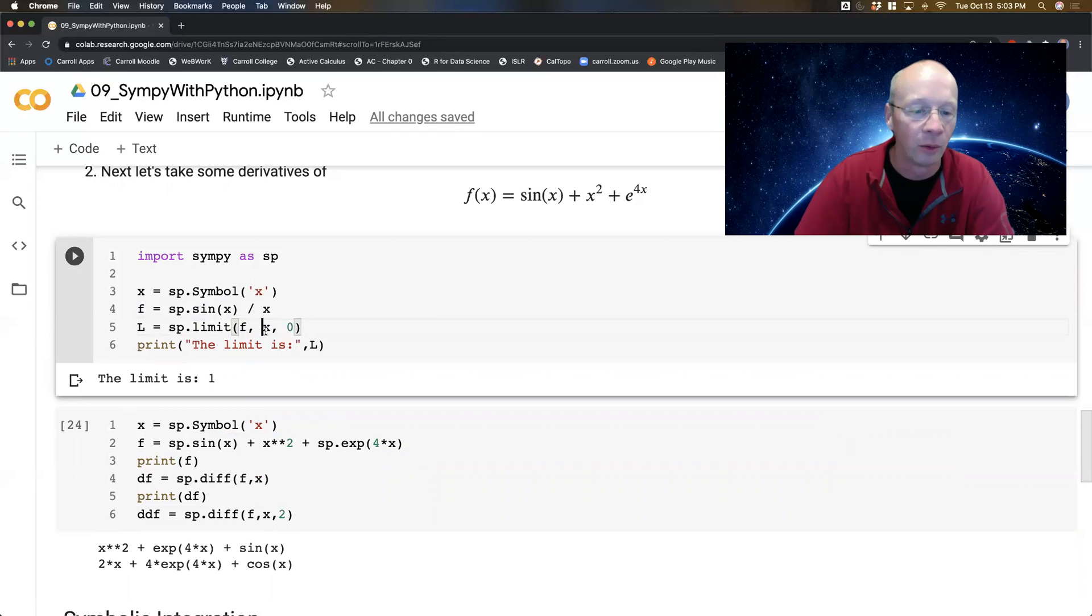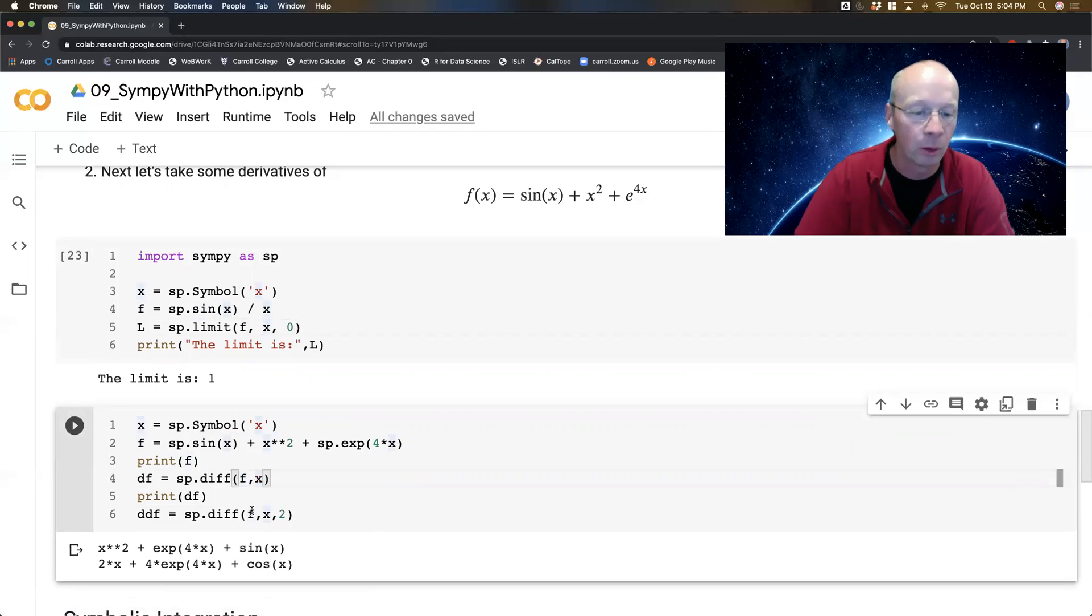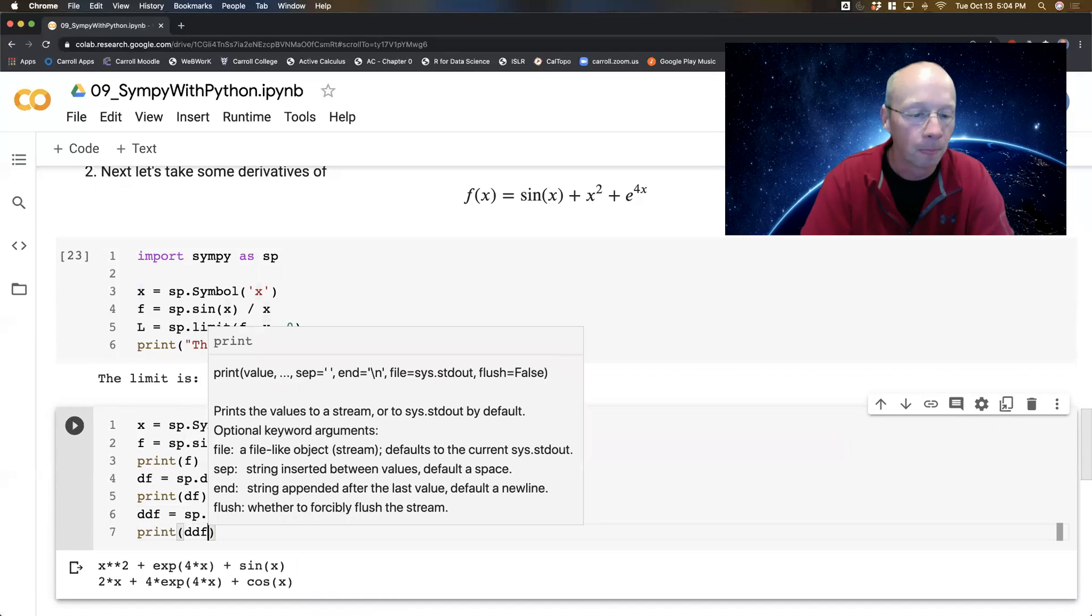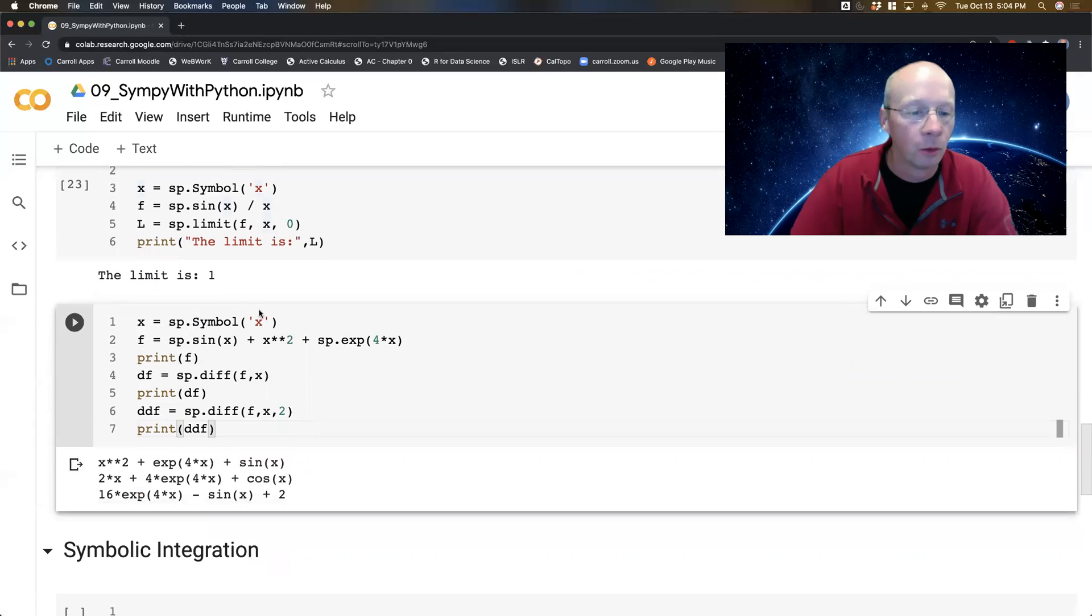The function, the variable, the function, the variable. And then this 2 is going to give me the order of the derivative. So taking two derivatives, let's see here, the derivative of 2X is going to give me a 2, got it. Derivative of 4E to the 4X is going to give me 16E to the 4X. Derivative of cosine is negative sine. And you can keep going, right?